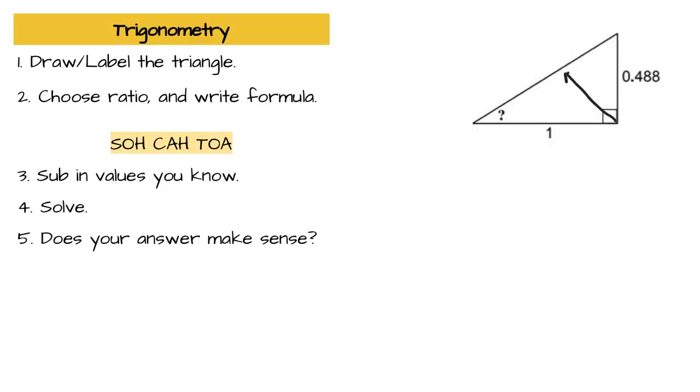So we're going to start off by finding our hypotenuse. Starting from our indicated angle that we want to know, we want to figure out our opposite side, and then our adjacent side.